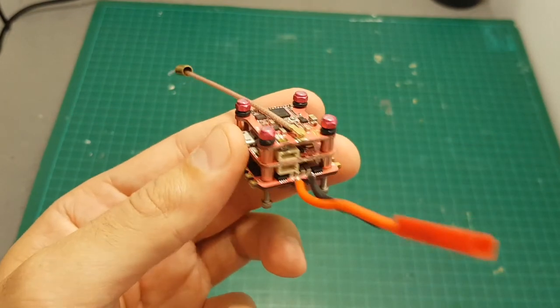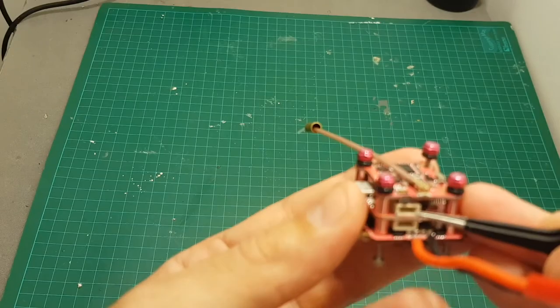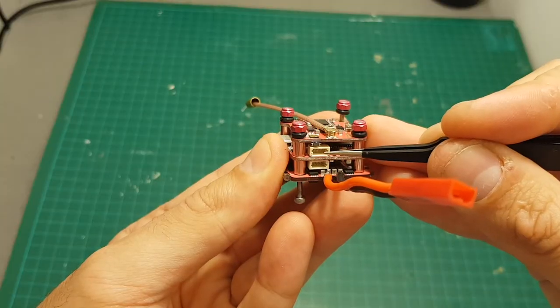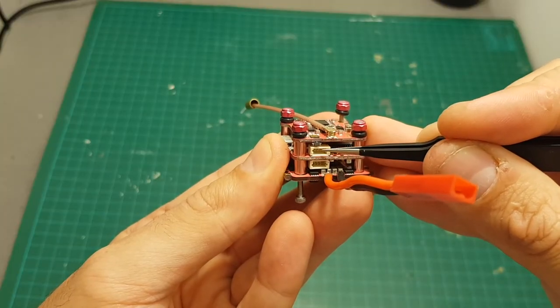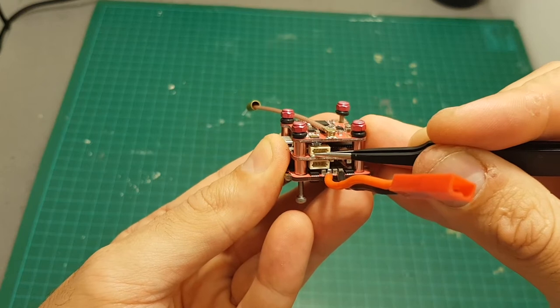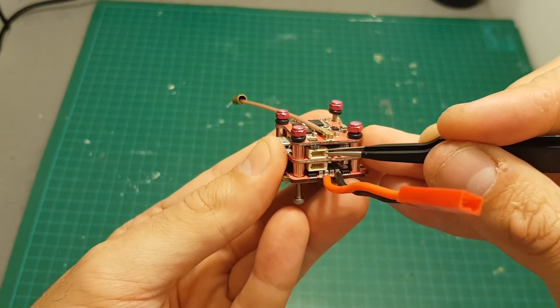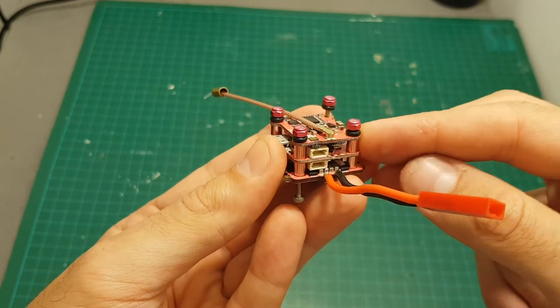Let me guide you through the connectors of this flight controller. On the middle we have the receiver connector. The right pin is the ground, then the 5 volts, RC in and on the left we have a 3.3 volts output so you can plug your DSM or DSMX receiver.